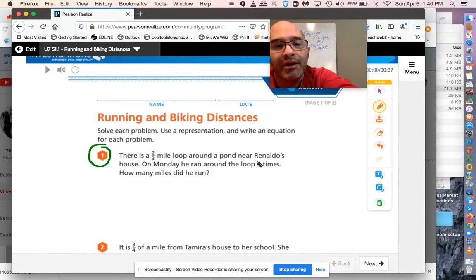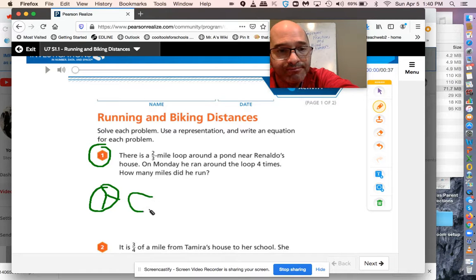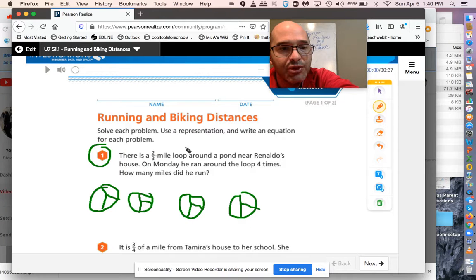There's a two-thirds mile loop around a pond near Ronaldo's house. On Monday, he ran around that loop four times. So he did two-thirds four times. So you can think of this like the 10-minute math. Draw a bunch of fractions. So we have two-thirds four times.